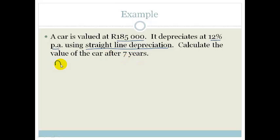So our formula is A equals P times 1 minus IN, because it's depreciation. In this case, our principal, the amount of money that we spent on our asset, was 185,000.